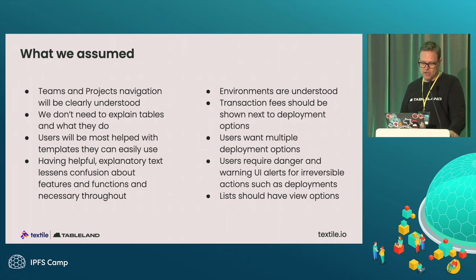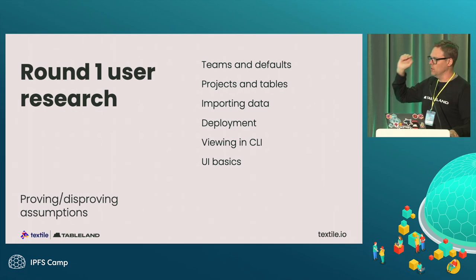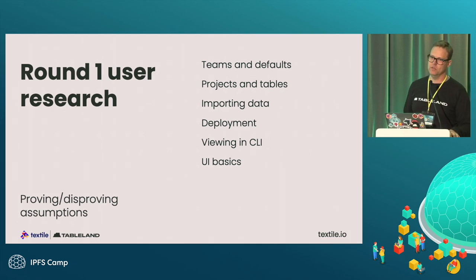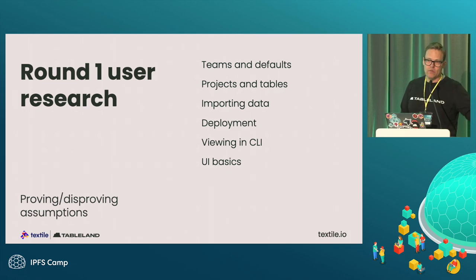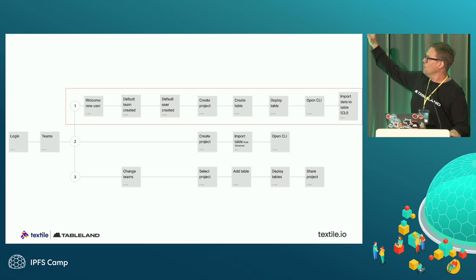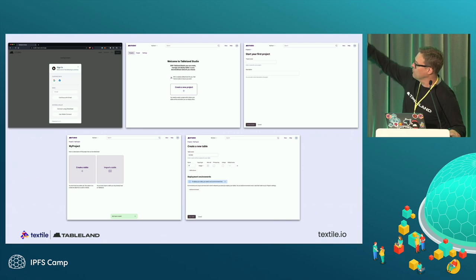We made all these hunches — really bets — and then we started talking to users. We did some rounds of user research, but we're always talking to developers in the community, doing hackathons. For the first round we looked at table stakes: they can import data, which is huge because we want people to put stuff into Tableland. The CLI came up huge as a fundamental part of the developer experience, and then UI basics — they need to be able to putter around and figure out what to do. We came up with three user journeys: get the person in, create a project, create a table, deploy that table, open a CLI, and import data to that table via the CLI.